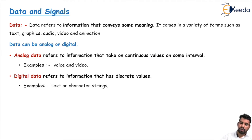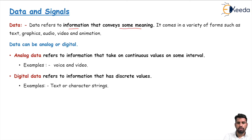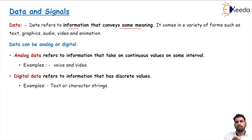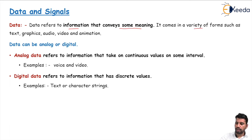Data refers to information that conveys some meaning. When you are doing WhatsApp with your friend, or sharing any PDF or video with your friend, you are sharing data. That data has some meaning — for example, sharing a PDF of your notes is sharing meaningful information. Data may come in a variety of forms: text, graphics, audio, video, or animation.